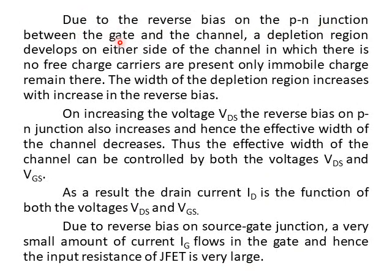Due to the reverse bias on the PN junction between the gate and the channel, a depletion region is formed on the sides of the channel in which there are no free charge carriers — only immobile charges remain there. The width of the depletion region increases with increase in the reverse bias voltage VGS.